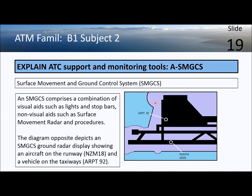SMGCS — the surface movement ground control system — is designed for controlling ground movements at large airports, especially in poor visibility. It usually combines some form of surface movement radar with an increased level of runway and taxiway lighting. This diagram represents a surface movement radar display — you can see an aircraft target taxiing on the runway and an airport vehicle indicated as well. Controllers who can't see the airport visually can still track vehicles and aircraft using the surface movement radar.